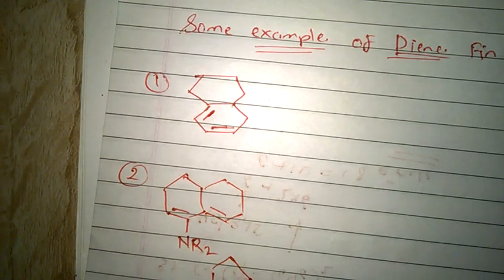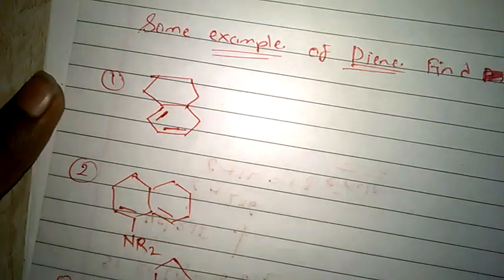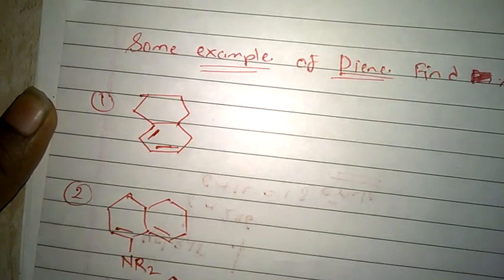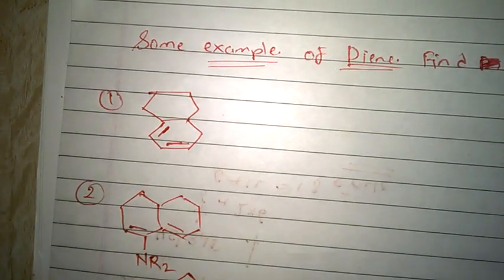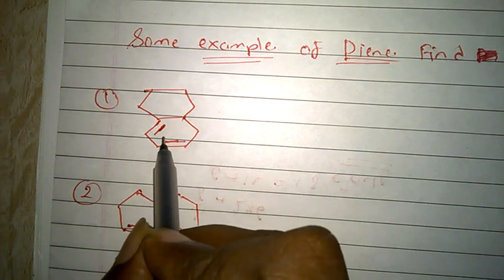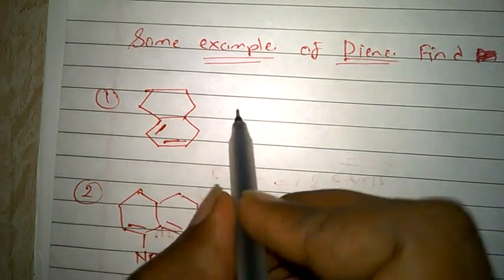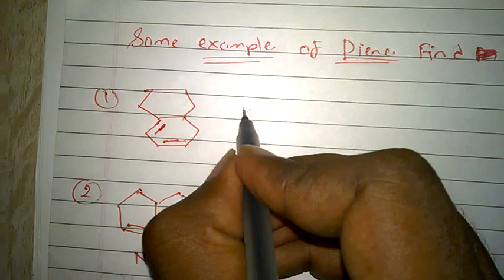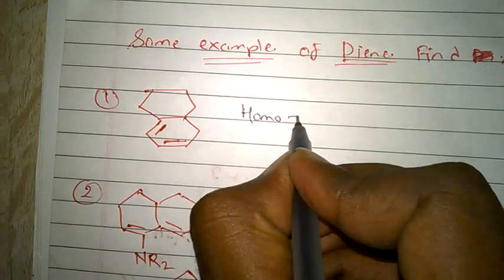Hey guys, now we are going to solve some problems based on finding lambda max for dienes. Let's take the first example. This diene is in the same ring, meaning the parent is homoannular. For homoannular, the base value is 253.